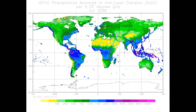Climate classification systems such as the Köppen Climate Classification System use average annual rainfall to help differentiate between differing climate regimes. Global warming is already causing changes to weather, increasing precipitation in some geographies and reducing it in others, resulting in additional extreme weather.